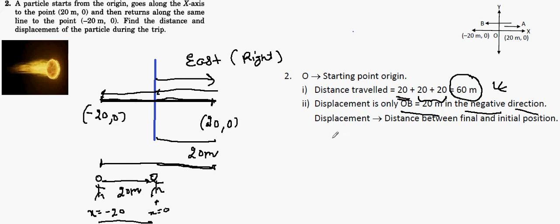the distance between the initial and the final position. So it depends upon the initial and final position. Earlier the person was here, and at last he reached here. So that is the displacement along the negative x-axis.